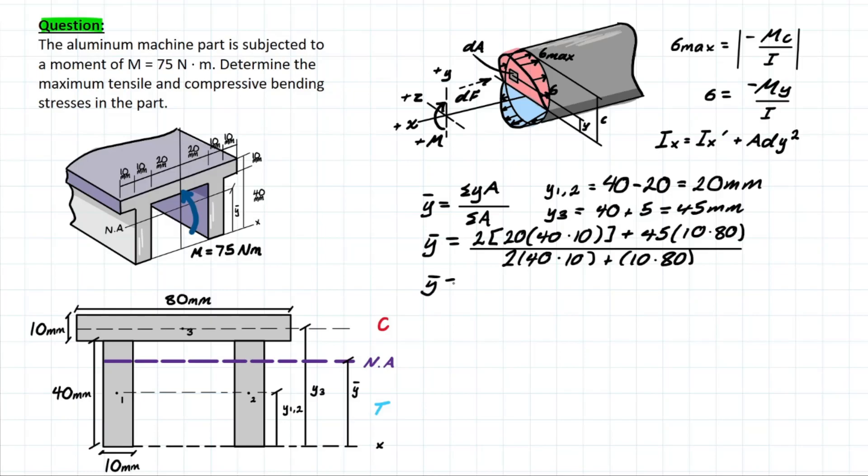And simply solving that, you're left with a y bar value of 32.5 millimeters. And that, once again, is our distance from the global x-axis to our neutral axis.